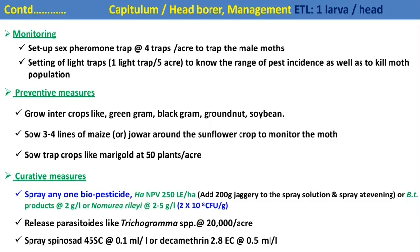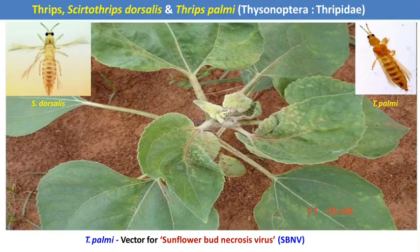For chemical control, we can spray the crop with spinosad and deltamethrin, which are the recommended chemicals against Helicoverpa armigera.